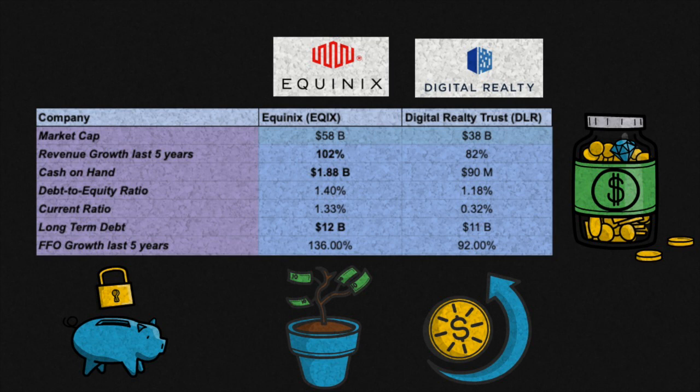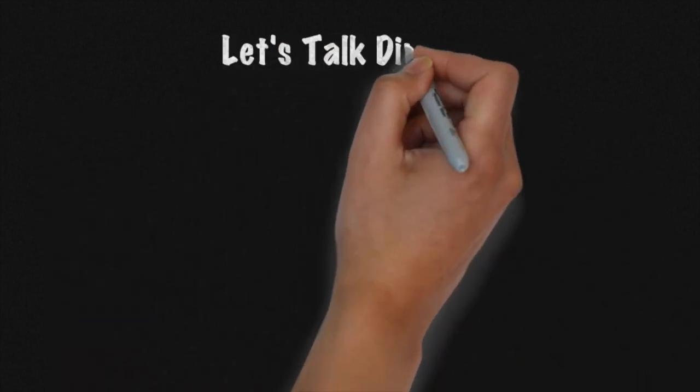Funds from operations is important as we can't just use net income to see how profitable REITs are. This is because they depreciate assets as an expense, even though the expense isn't really costing them anything. And actually, most real estate tends to go up in time. So for our funds from operations, we'll add back depreciation expense. Both of these companies have grown quite well over the last five years.